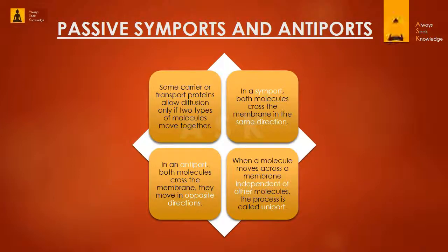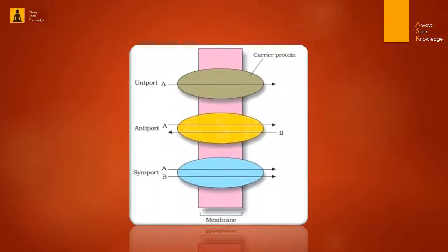Some carrier or transport proteins allow diffusion only if two types of molecules move together. In the symport, both molecules cross the membrane in the same direction. In an antiport, both molecules cross the membrane but move in opposite directions. When a molecule moves across a membrane independently of other molecules, the process is called a uniport.